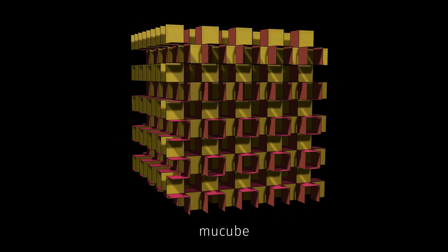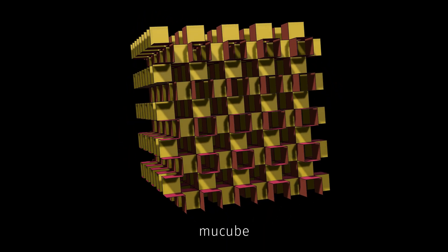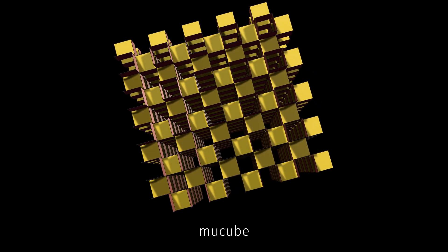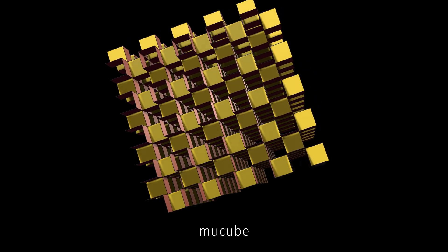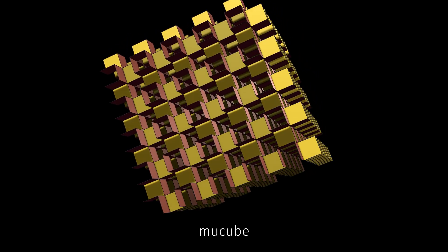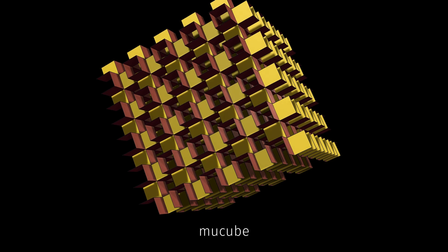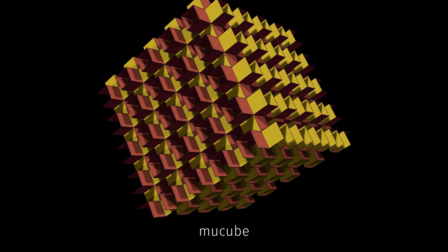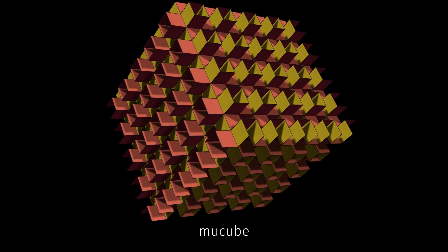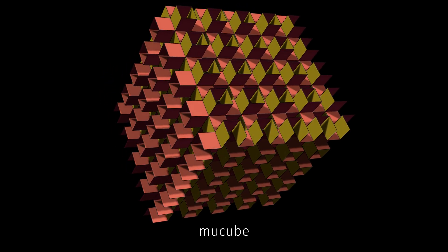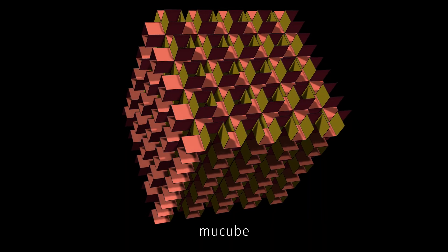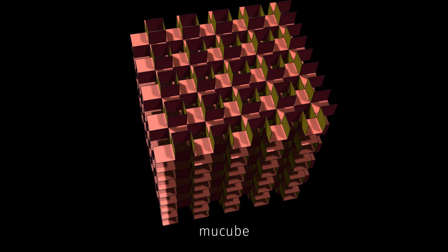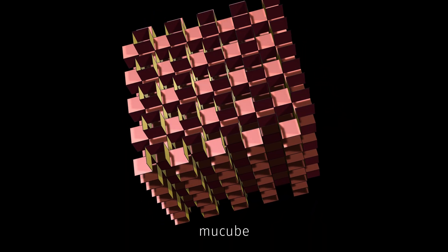Every face is a square, every edge is shared by exactly two faces, and every vertex connects six squares in a neat repeating pattern. It may not look like any polyhedron you've seen before, but in a very real sense it is a polyhedron — one that fills all of space.